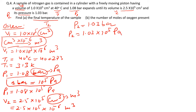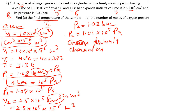All parameters are changing — volume, temperature, and pressure are all different between initial and final states. No two parameters are the same, so we must choose the characteristic gas equation.